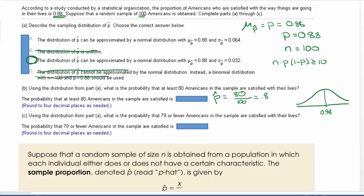Now I want to put this 0.8 on our normal curve. That's going to be to the left, I'll put over here somewhere, 0.8. It's saying that we want to find the probability that at least 80 Americans in the sample are satisfied. So this is saying that p-hat is going to be greater than or equal to 0.8. We're looking for the area to the right of 0.8.